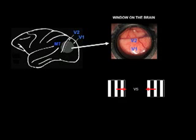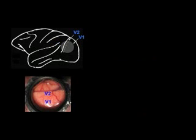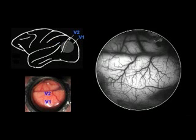We conducted optical imaging in monkeys viewing stimuli that consisted of either directional moving gratings or moving random dot fields. To the naked eye, the view through the chamber reveals the cortical surface marked by a network of cortical vessels.